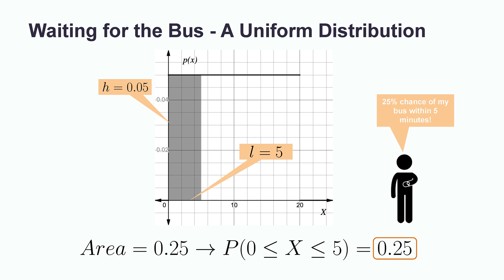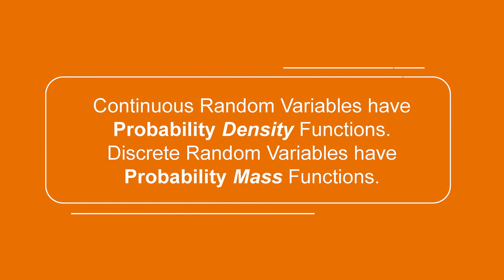Hopefully, this has given a brief look into making use of probability density functions for interpreting the probability of continuous random variables. Before we wrap up this lesson, just one specific vocabulary point. Continuous random variables have probability density functions, while discrete random variables have probability mass functions.